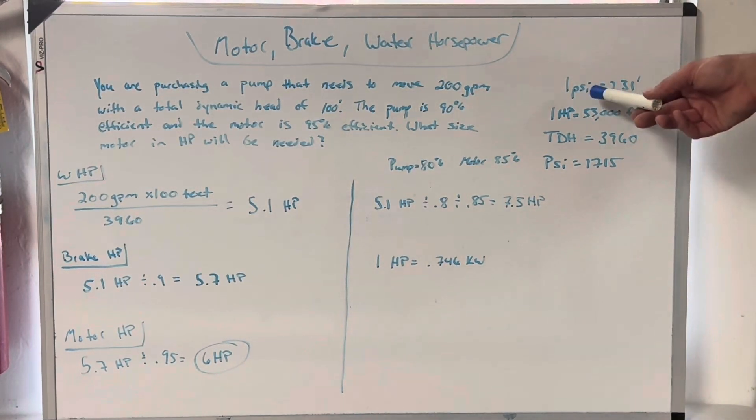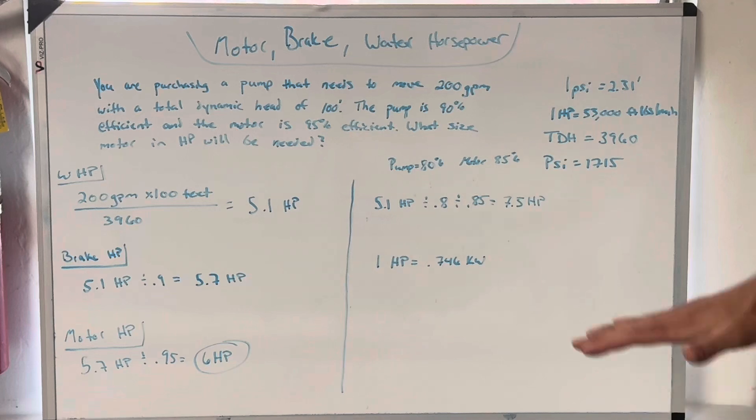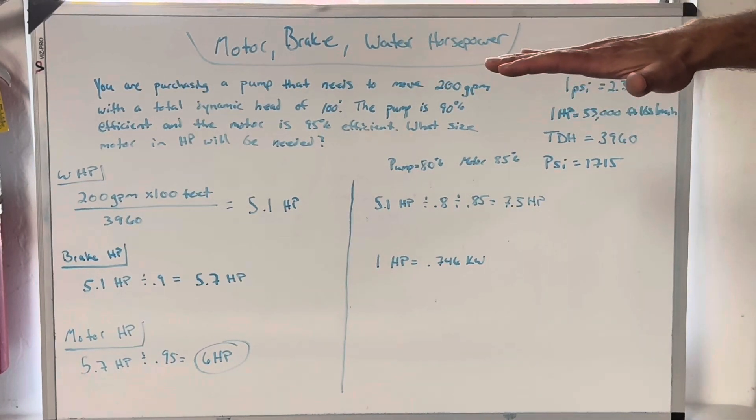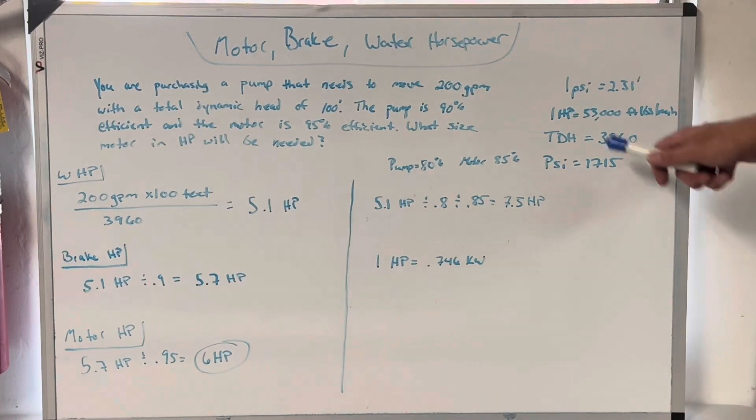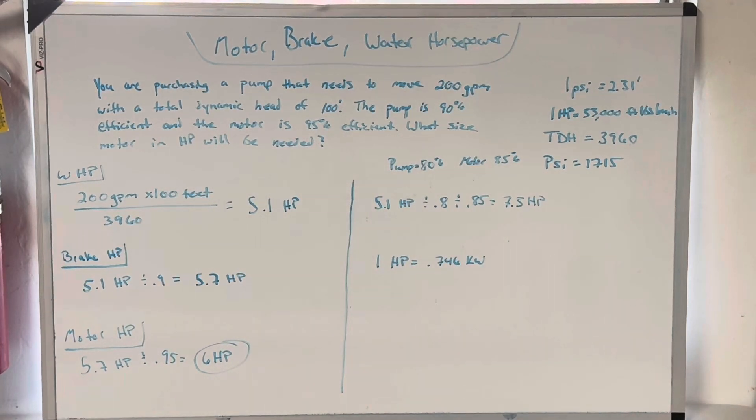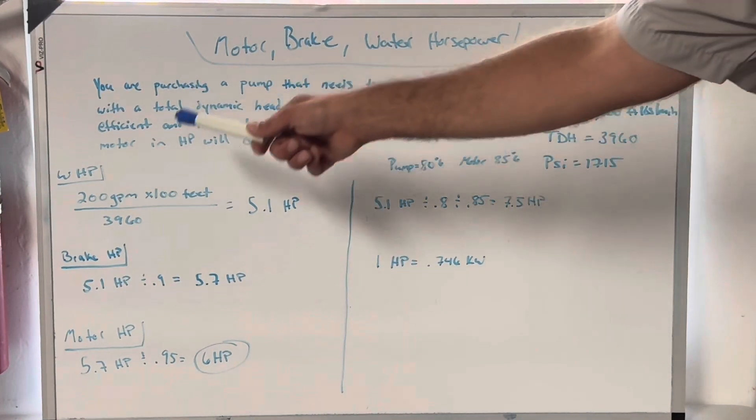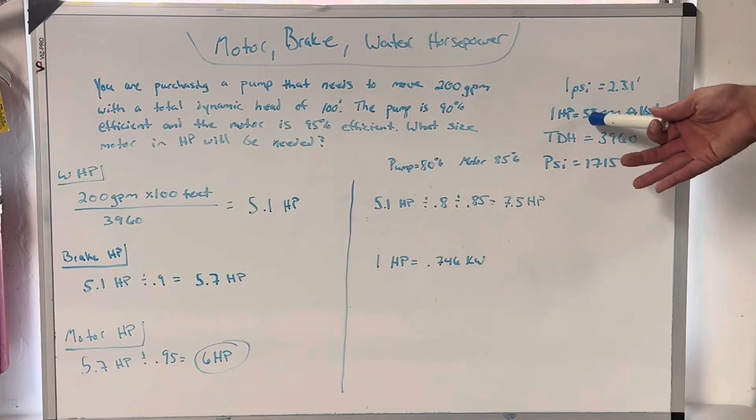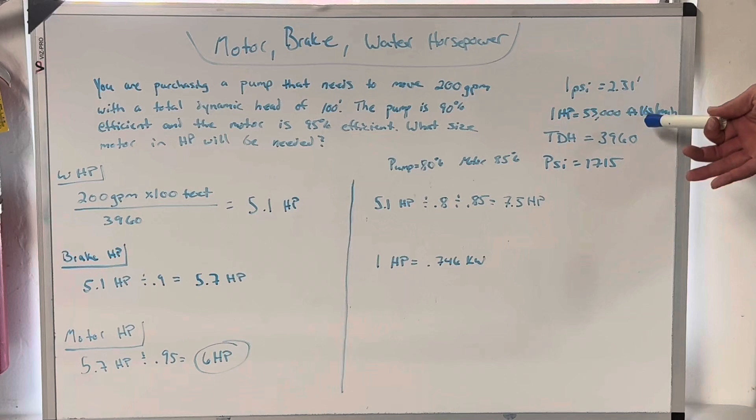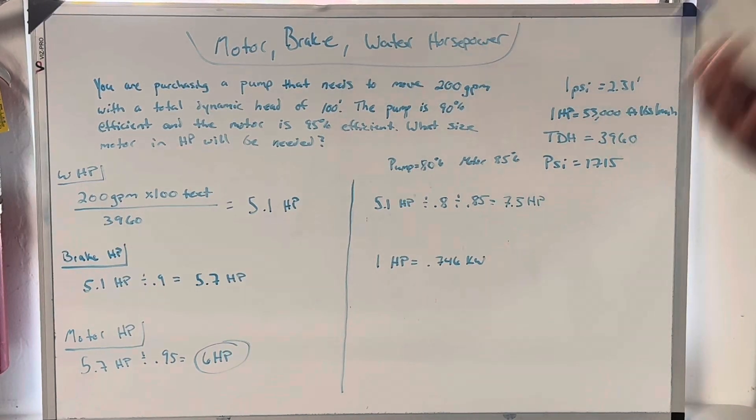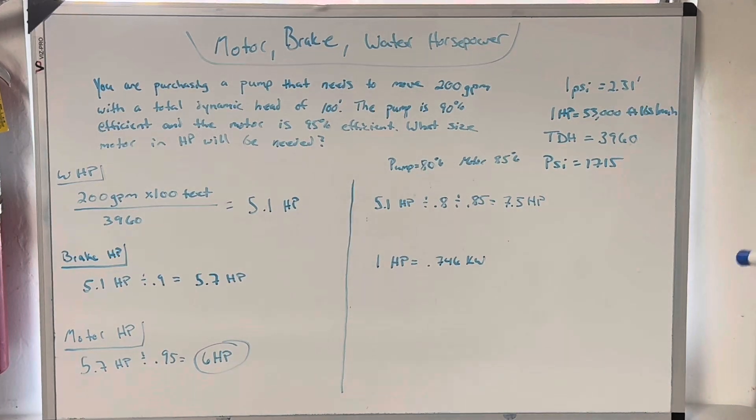A couple of constants you should know if you do not know this already, one PSI, one pound per square inch equals 2.31 feet of vertical head. So 2.31 foot column of water would have one PSI on the bottom. One horsepower equals 33,000 foot pounds per minute. I explained that in my math problem that's going to be in the links below with operating costs. TDH means total dynamic head. And its constant is 3,960. When you're doing this math problem, there's a constant. And what that is, is one horsepower divided by the weight of a gallon of water. So 33,000 divided by 8.34. It's not exactly 3960, but that's the number they use on the conversion sheet.